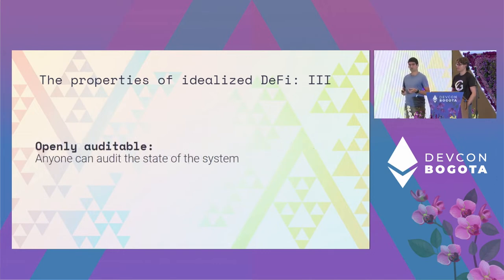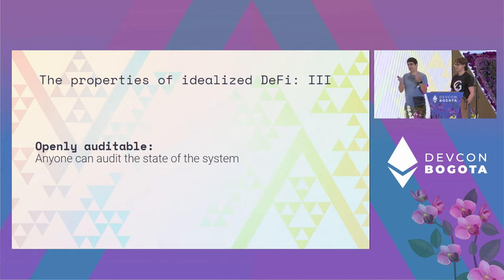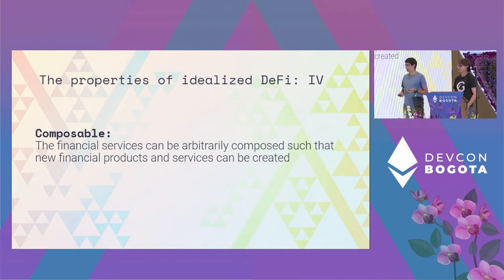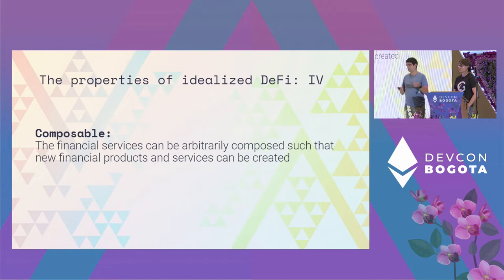DeFi should also be openly auditable, meaning anyone can look at the state of the blockchain powering the DeFi and see the transactions and what is going on. And finally it should be composable, which means different protocols should be able to communicate and interact with each other to form new financial systems on top of this.